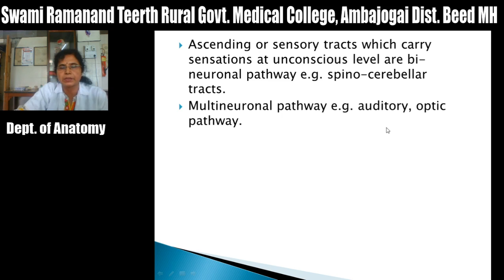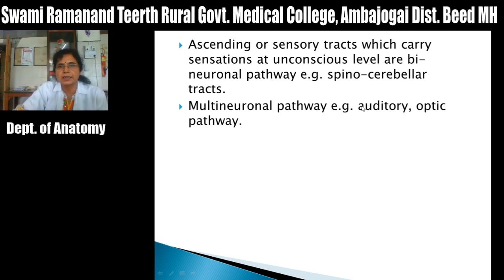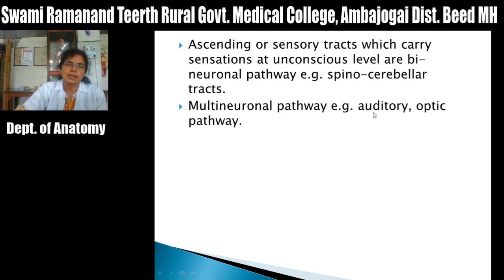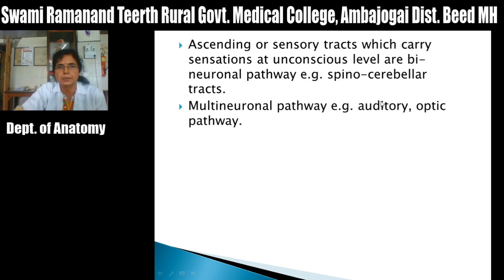For example, the auditory pathway: the first neuron lies in the spiral ganglia, the second is in the cochlear nuclei, the third in the superior olivary nuclei, the fourth in the inferior colliculus, the fifth in the medial geniculate body. From the medial geniculate body, fibers project to the auditory sensory area for the perception of hearing. This is a multineuronal pathway.